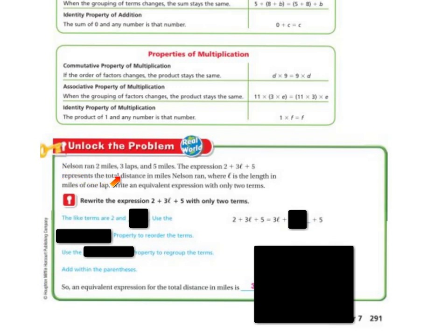Now let's work through a problem. Nelson ran 2 miles, 3 laps, and 5 miles. The expression 2 plus 3L plus 5 represents the total distance in miles Nelson ran, where L is the length in miles of one lap. Write an equivalent expression with only 2 terms.